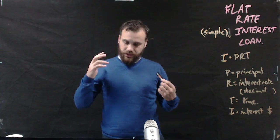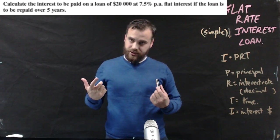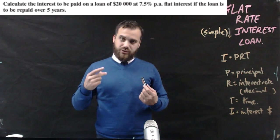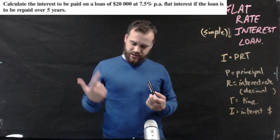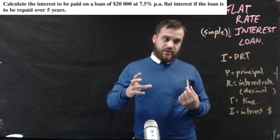Okay so we're going to do this question up here. Calculate the flat interest to be paid on a loan of $20,000 at 7.5 percent per annum if you're paying it off over five years.